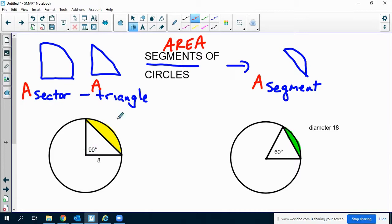So this first one, we're going to find the area of the sector. The area of the sector, once again, is πr² times the fraction of the circle. So π times 8² times 90 over 360, which is 1/4. So that ends up being 16π.